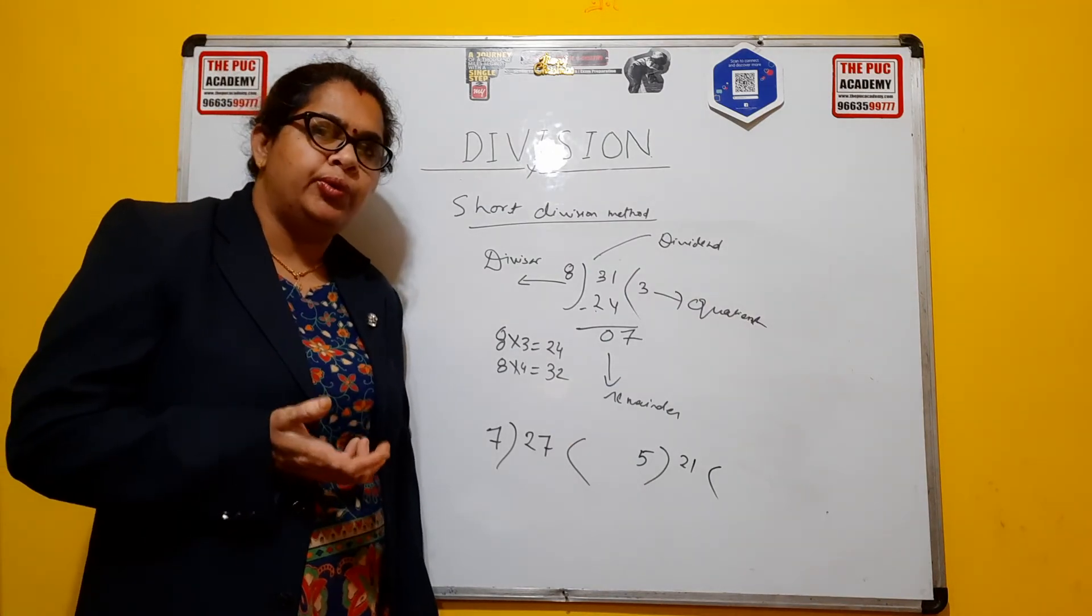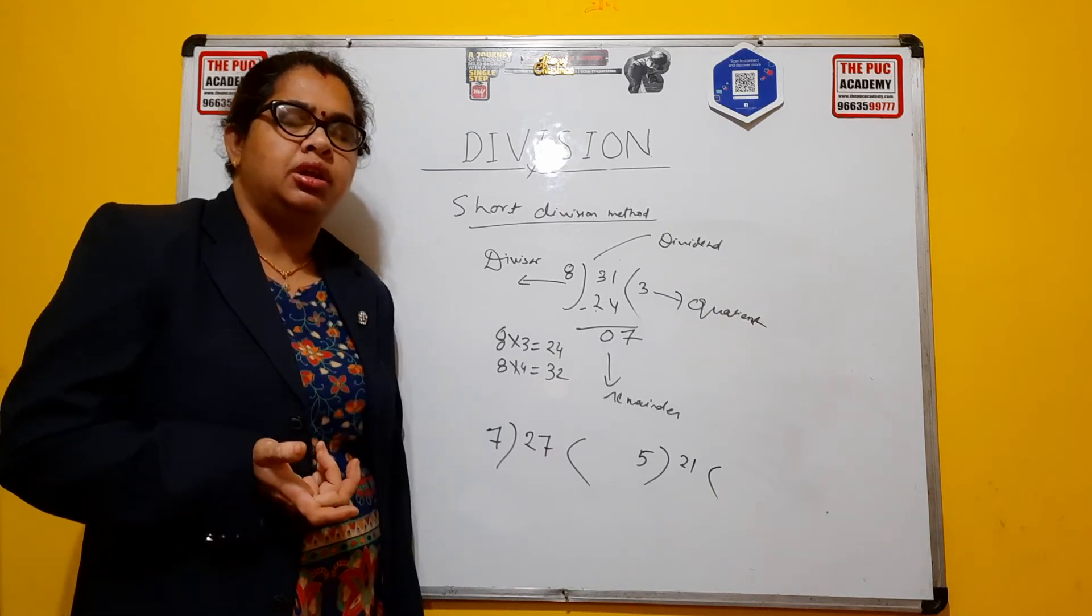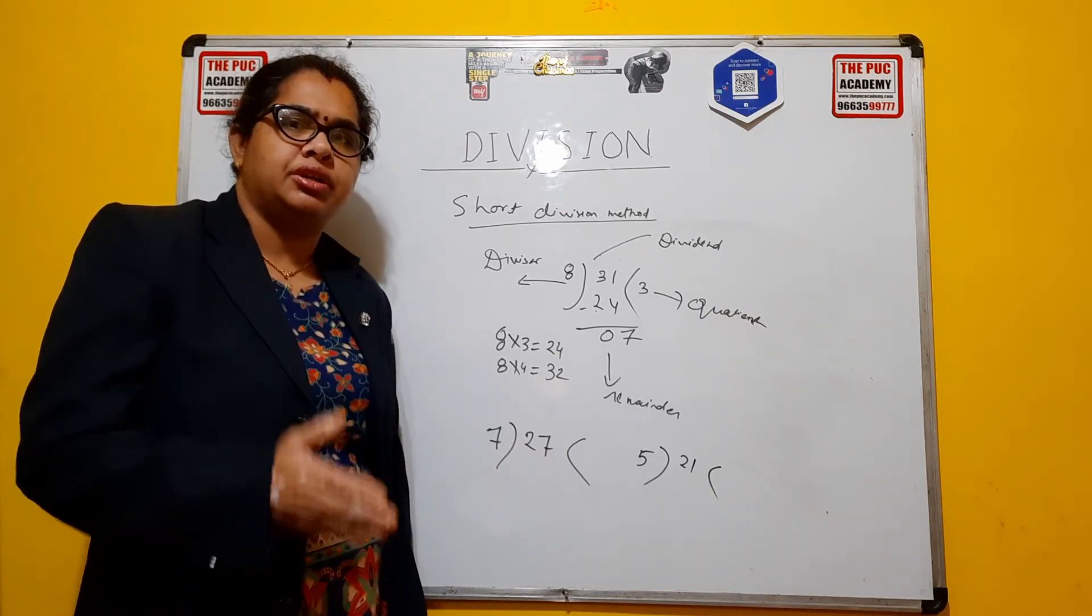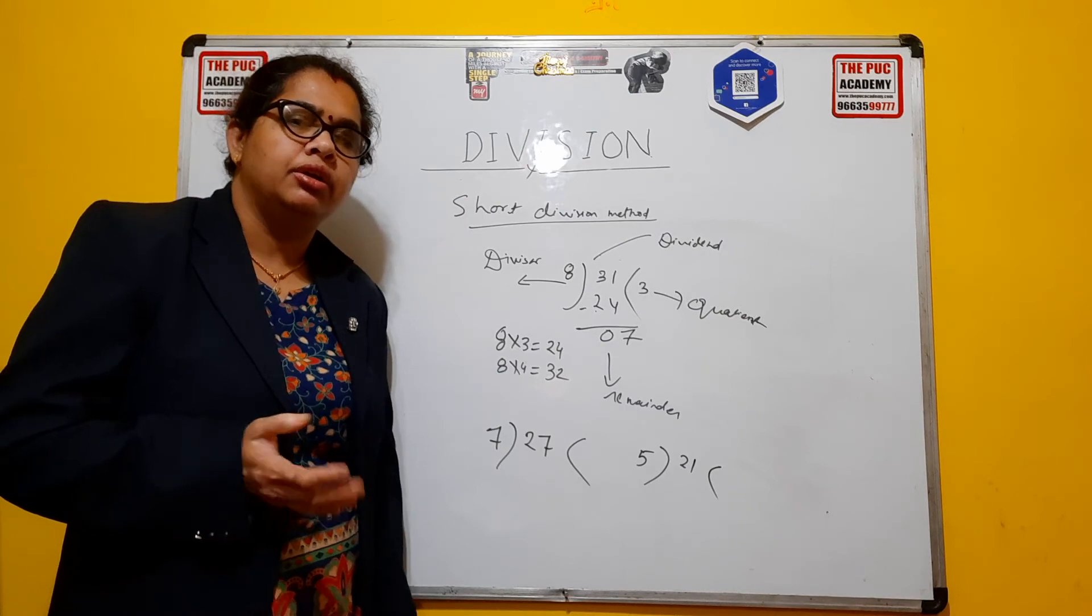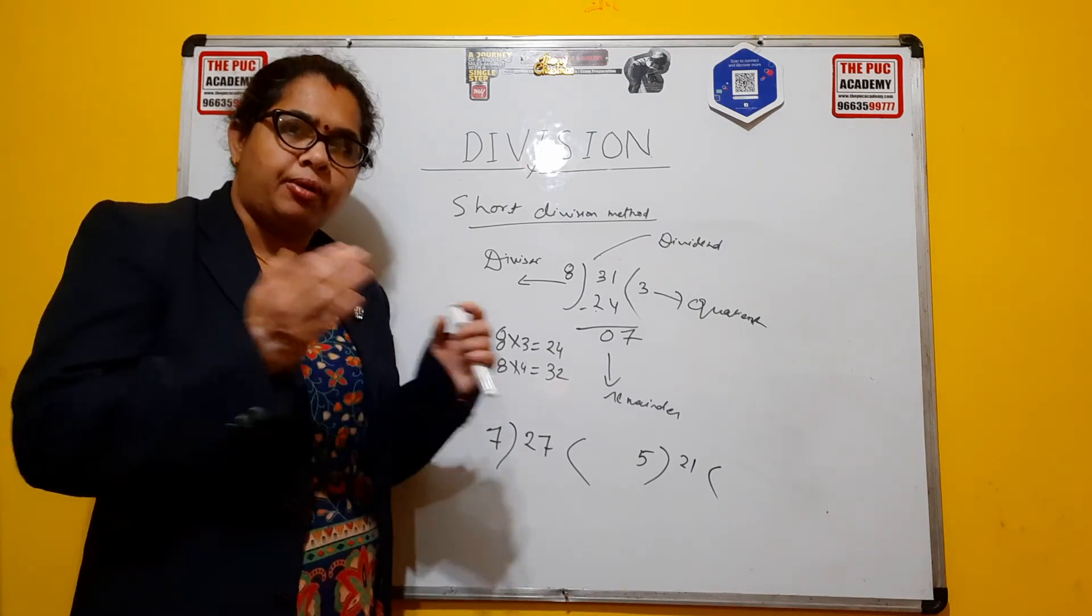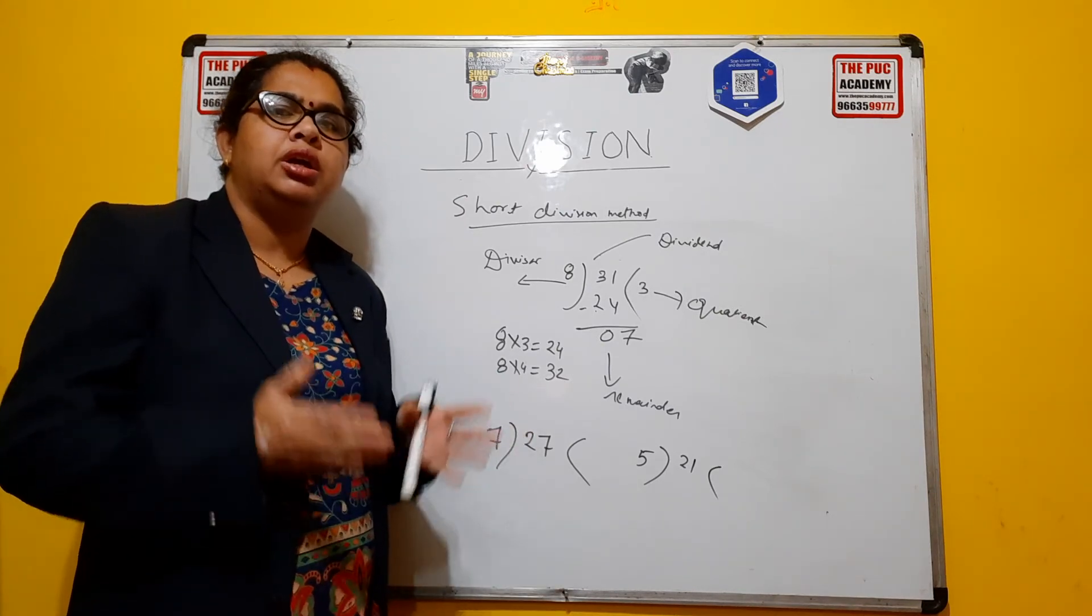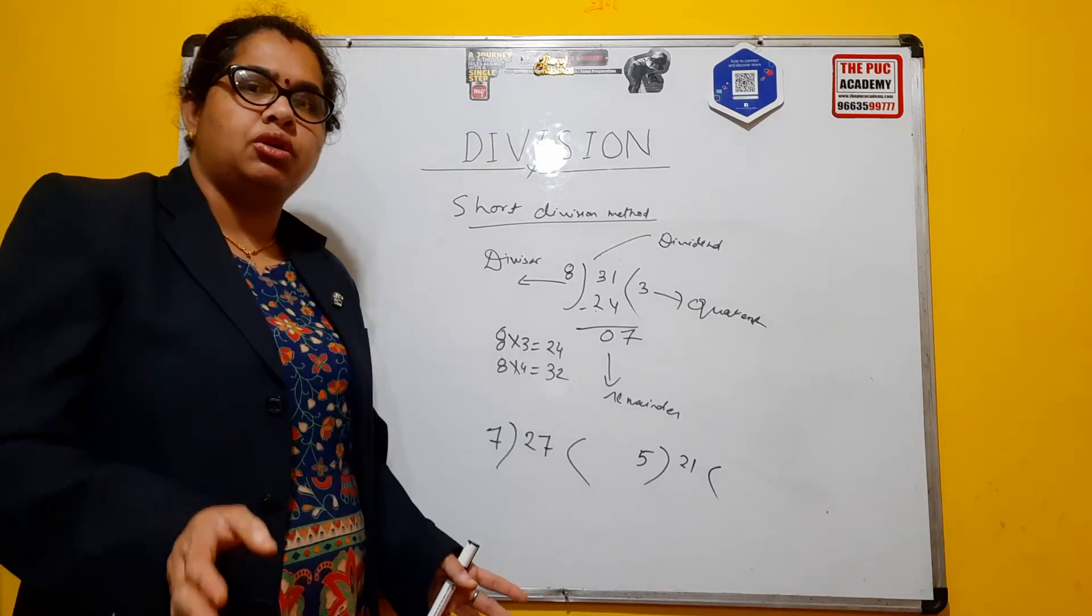So as I have told you, division is a repeated subtraction. If something is left out, that is a remainder. If it is not equally divided in the group, so you have a big number and you have to divide into the small small groups. That is called division.